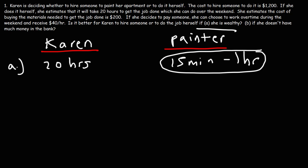Now what about Part B — if she doesn't have much money in the bank? In this case, saving time is not as important as saving money. So she's going to make the decision that will save her the most amount of money. If she hires the painter, it will cost her $1,200.